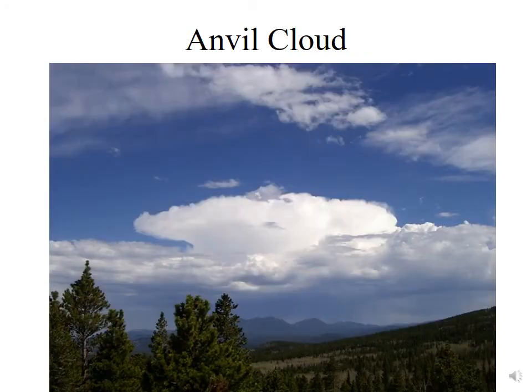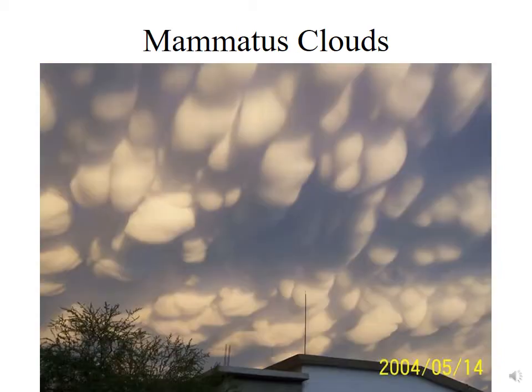The anvil cloud is easy to spot — it spreads out at the tropopause at the base of the stratosphere. It's generally composed of ice, giving it fuzzy edges, and will often have mammatus clouds hanging underneath. Here's an example of mammatus clouds being lit up at sunset, where the sun is underneath the anvil cloud and shining up on it — a pretty dramatic view.